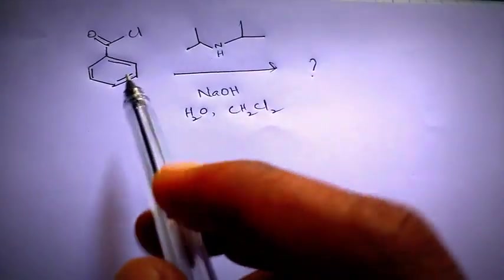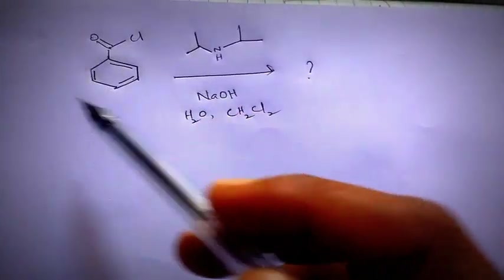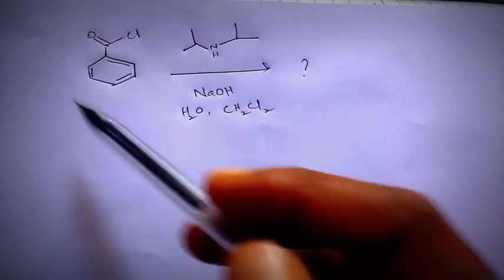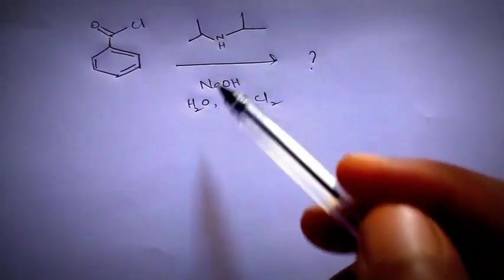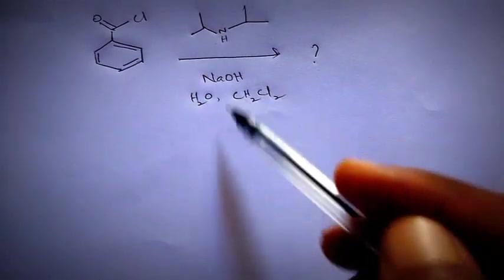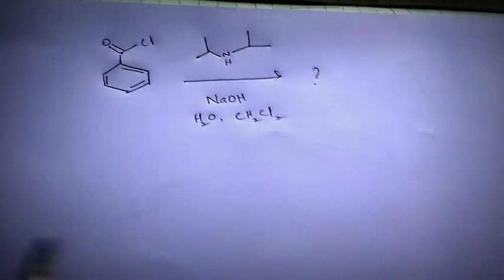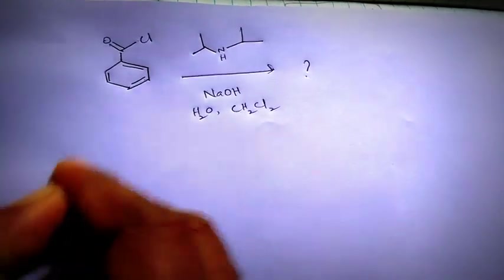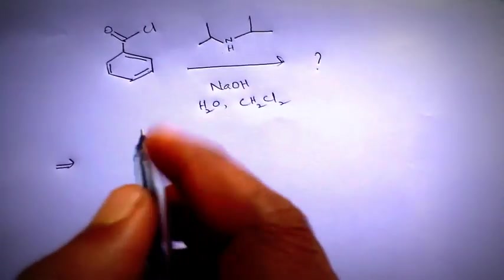So if you observe, this aromatic carbonyl chloride reacting with secondary amine and NaOH, water and dichloromethane. One can easily give the product by using this.